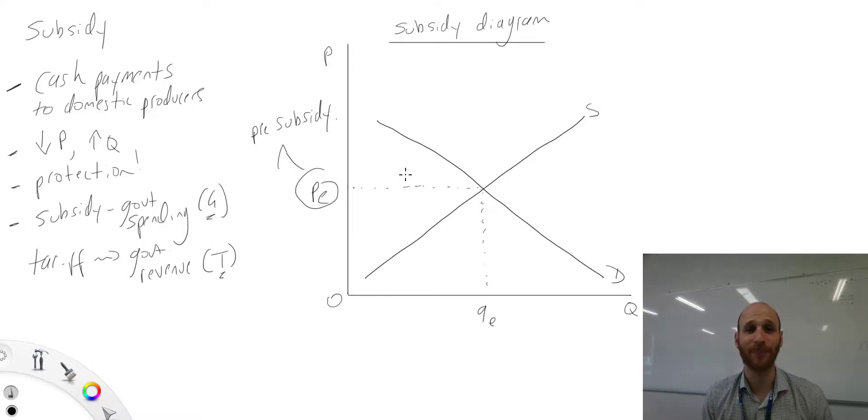Then the government decides okay, we need to help, we need to protect, we need to support our domestic producers, and so they decide to pay a subsidy. Now this will create a new supply curve - an increase in supply.